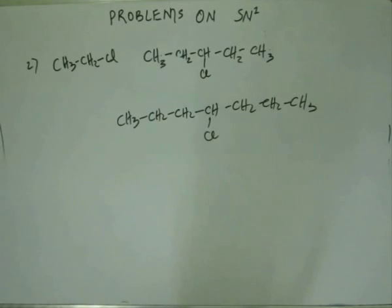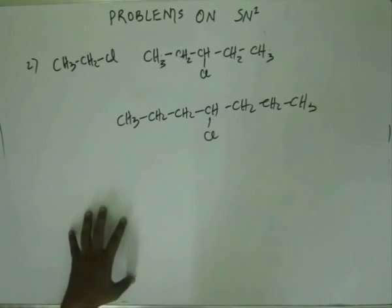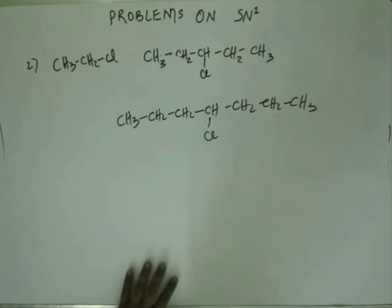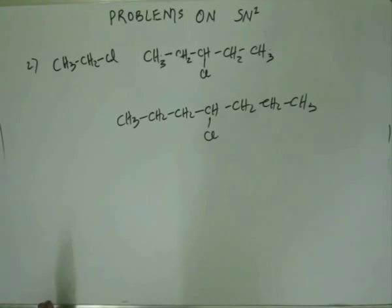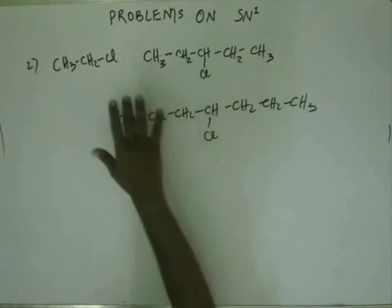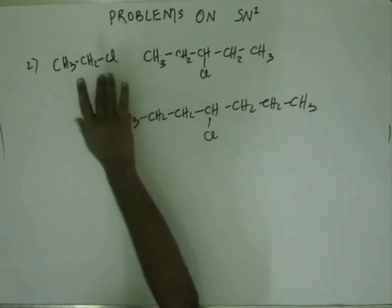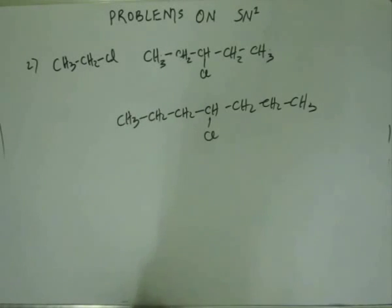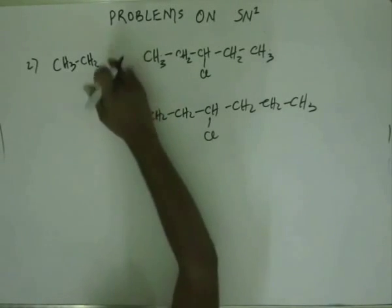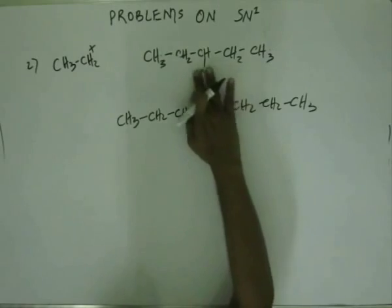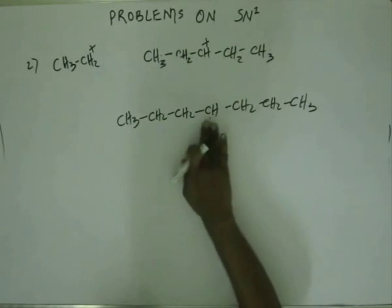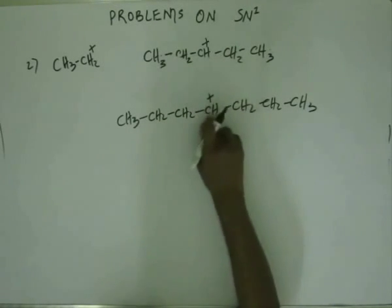Which substrate will have the higher rate of reaction? The pathway to reach the answer is to decide on the RDS for each substrate. In the substrate for which the RDS is crossed most easily, that substrate will have the highest rate of reaction. In the first step of SN1, the leaving group goes off and you will have correspondingly 3 intermediates.